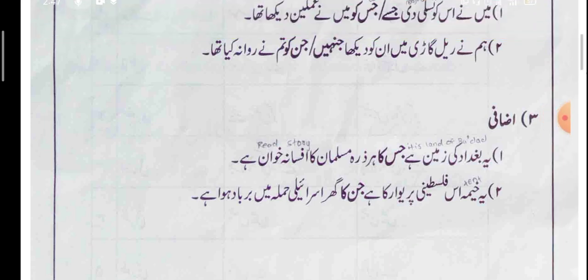The third type: اضافی (possessive) condition. First example: یہ بغداد کی زمین ہے جس کا ہر ذرہ مسلمان کا افسانہ خواہ ہے — This is the land of Baghdad whose every grain narrates the story of a Muslim. The word 'whose' in Urdu is جس کا. This word جس کا is Isme Maasool in اضافی (possessive) condition, and it is for singular.